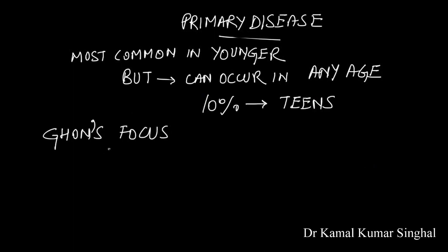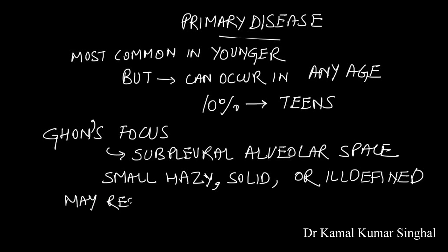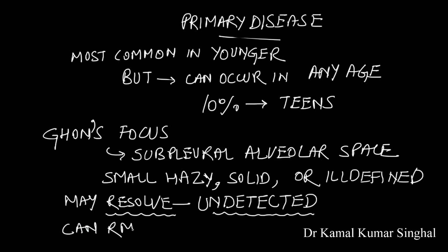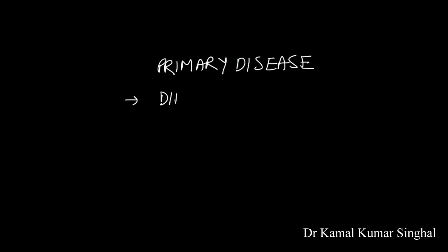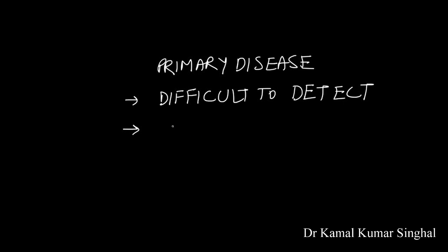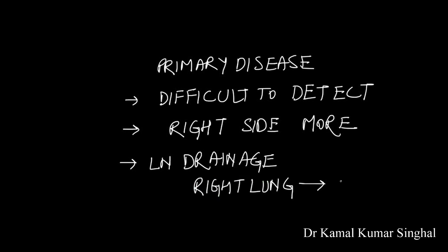The Ghon's focus, or parenchymal lesion, is a sub-pleural alveolar space lesion. It may be a small hazy lesion, solid, or ill-defined, and it may resolve undetected. It can remain dormant, like latent TB. Therefore, primary disease can be difficult to detect. The right-sided lymph node is more commonly seen because of the lymph drainage pattern — the right lung drains into the right lymph node, but the left lung drains into both the right and left lymph nodes.